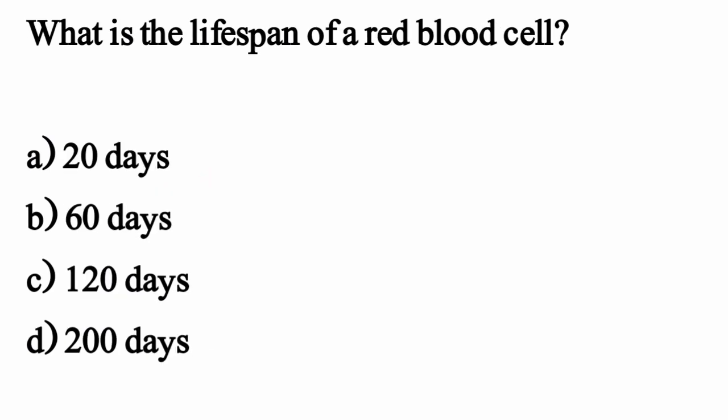What is the lifespan of a red blood cell? The correct option is Option C: 120 days.